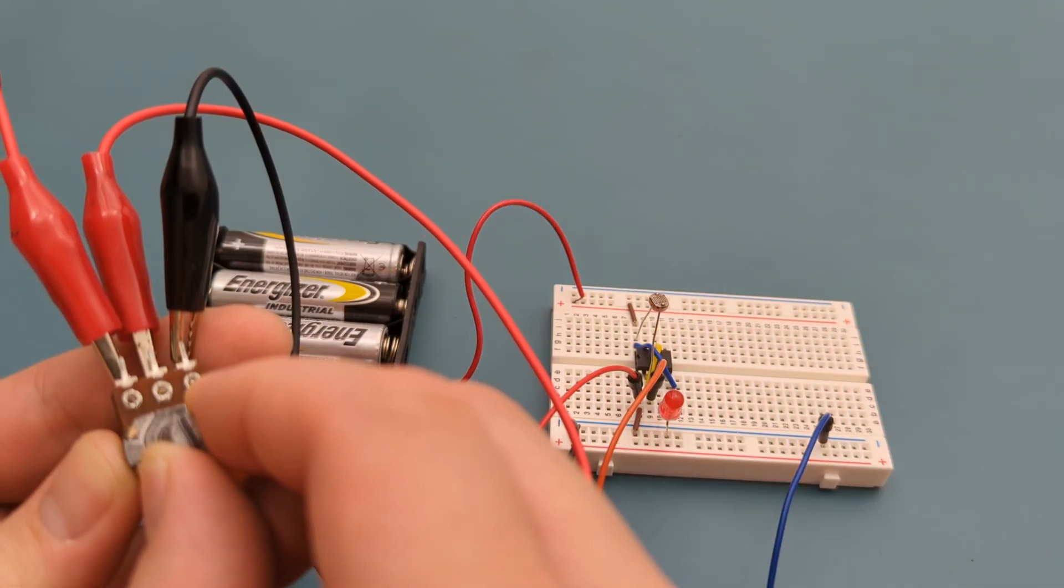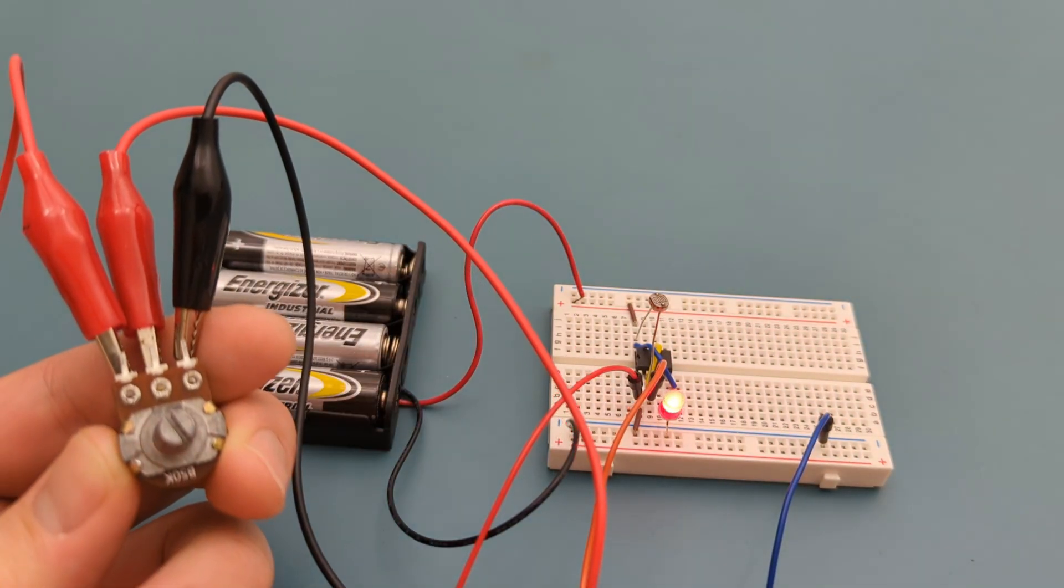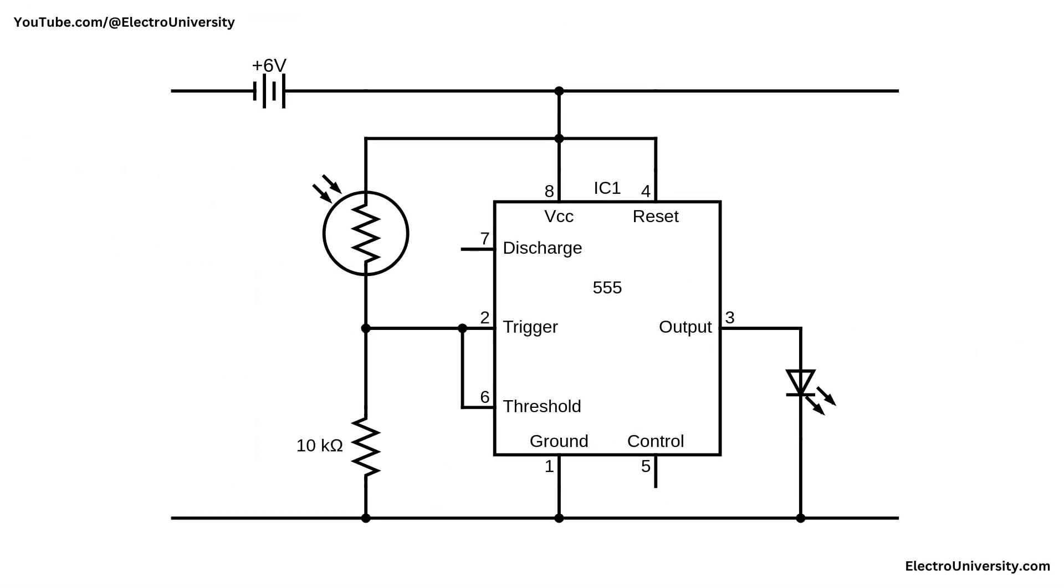If I turn it even further, the LED stays on even in bright light. Let's dive into the circuit and break it down step by step. This circuit is an automatic street light system that uses a 555 timer IC to control an LED based on ambient light levels. Four AA batteries or six volts are connected to power the circuit. Pin eight of the 555 timer receives this voltage and pin one is connected to ground.